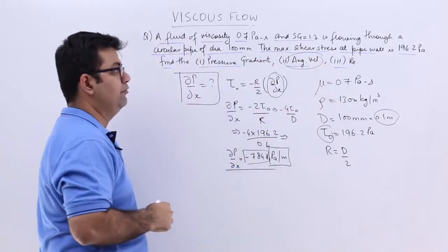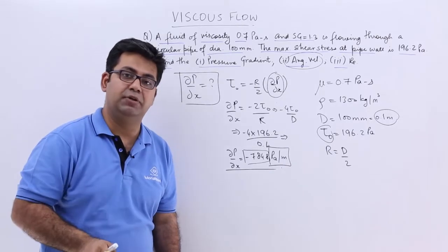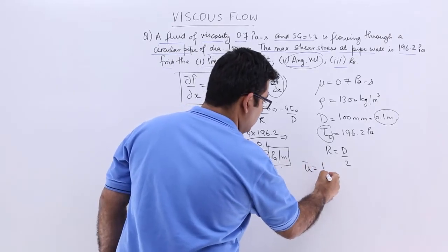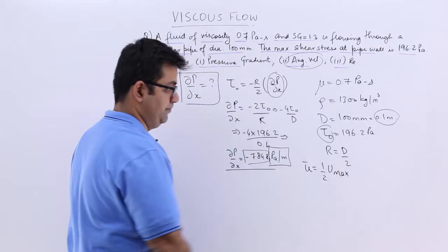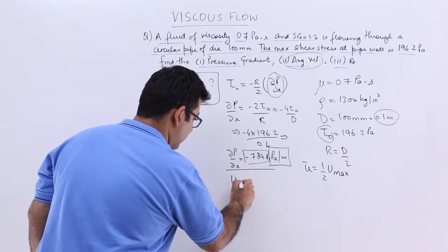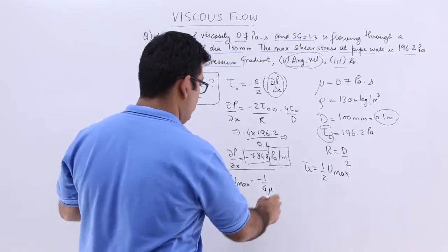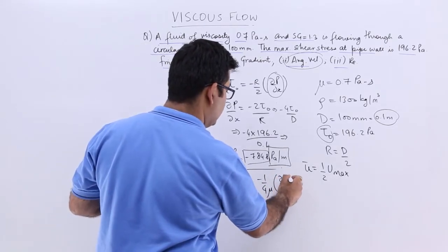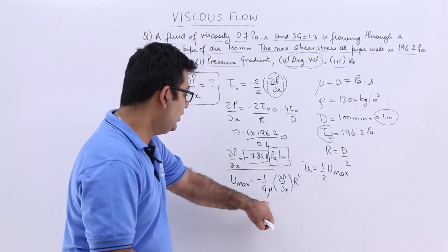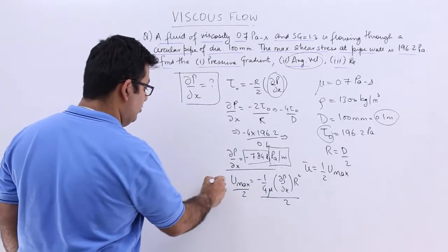Let's calculate the average velocity. Now you remember that there is a relation between the maximum velocity and the average velocity. So that is, that U bar is equal to half the maximum velocity. So what is this maximum velocity? So maximum velocity was, it was minus 1 by 4 mu into curly P upon curly X into capital R square. So that is the maximum velocity. You divide this by 2, entire equation by 2, you get the value for U bar.